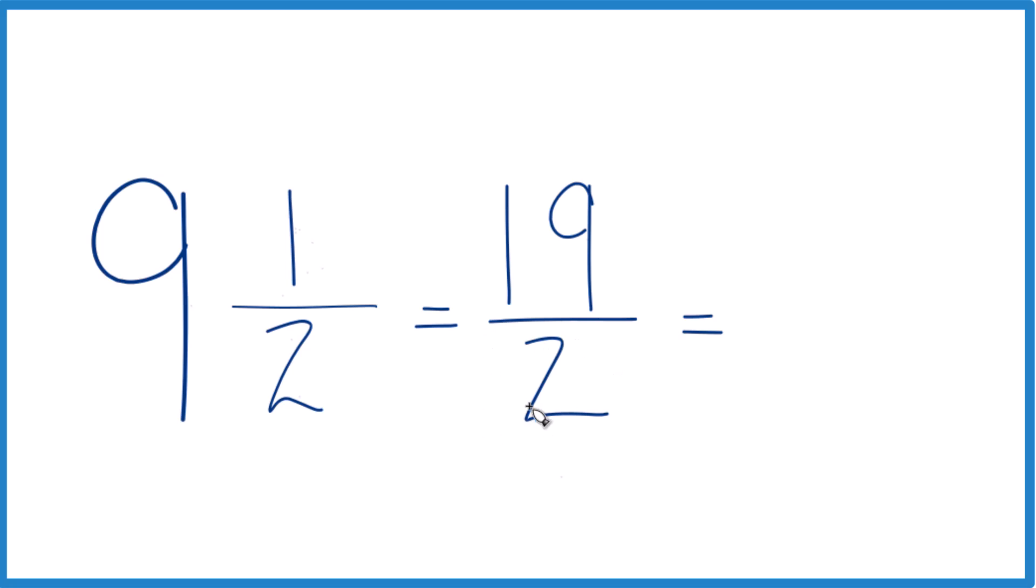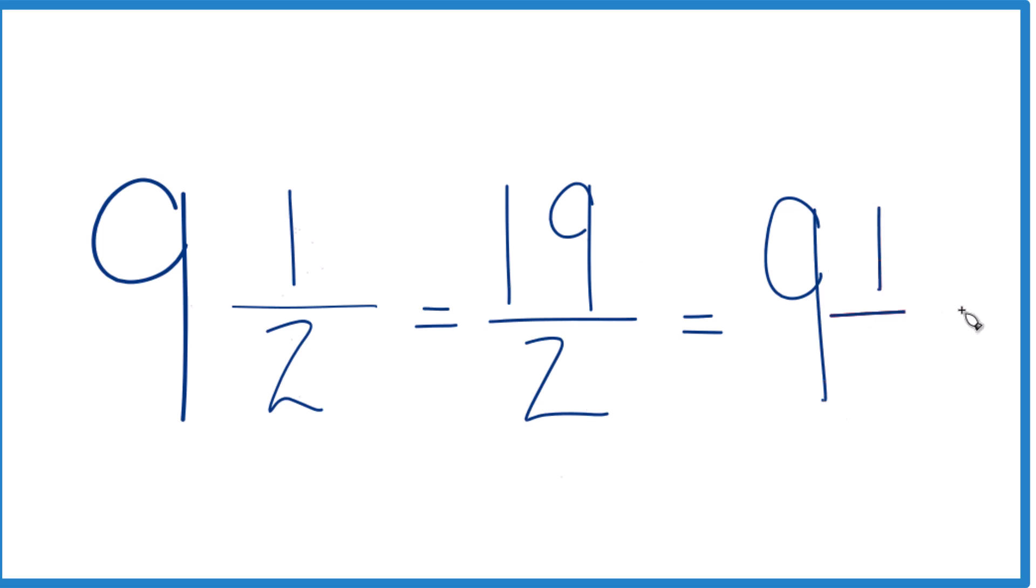You can even check your work, because 2 goes into 19 9 times. 9 times 2 is 18, and we'd have 1 left over. Bring the 2 across here, and 9 and 1 half. That's what we got before, so we know we did it correctly.